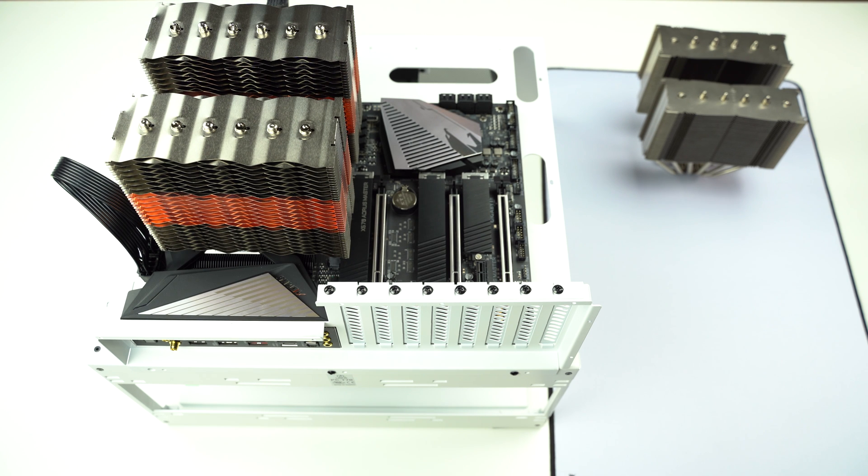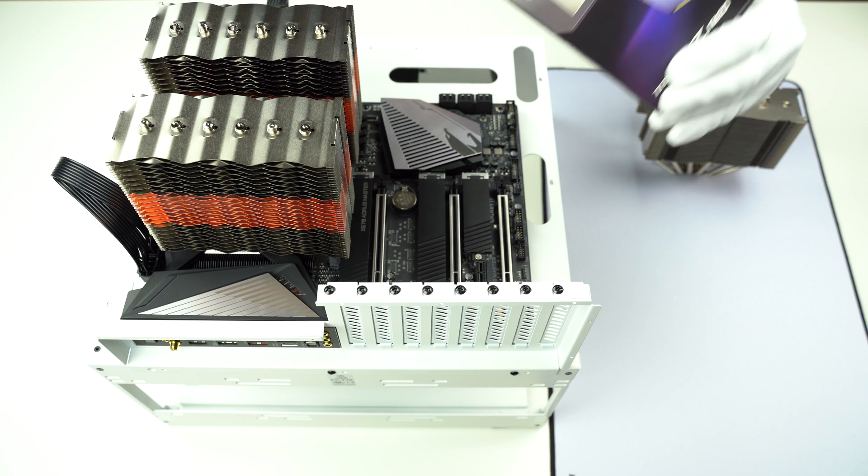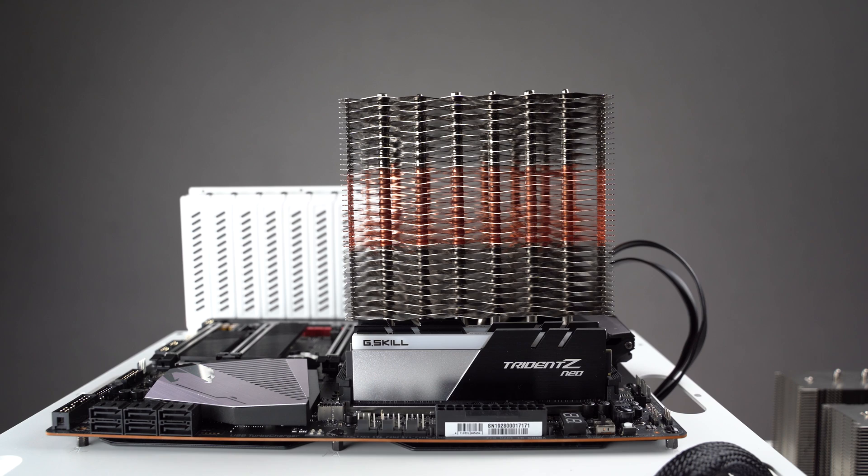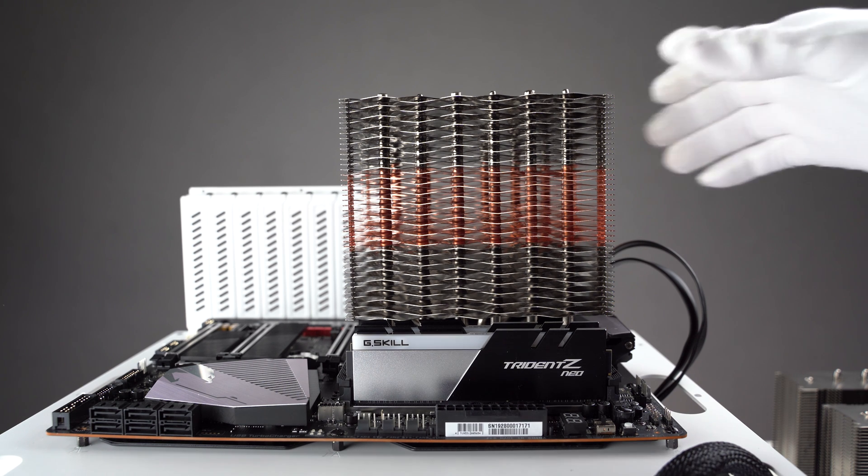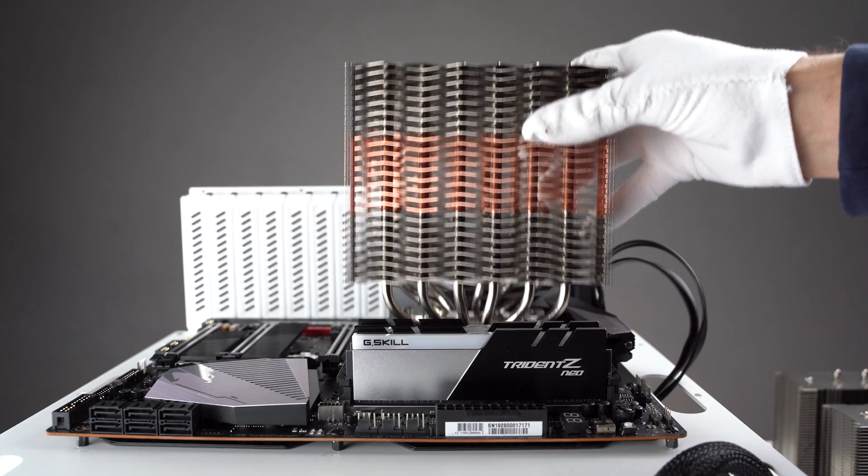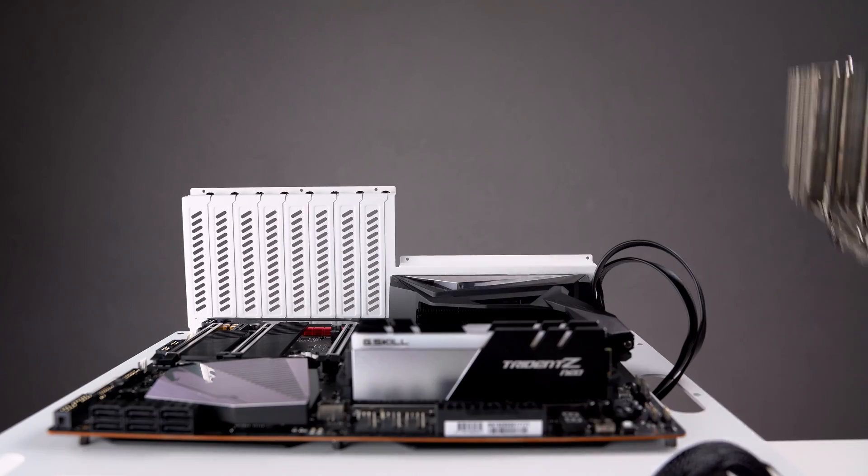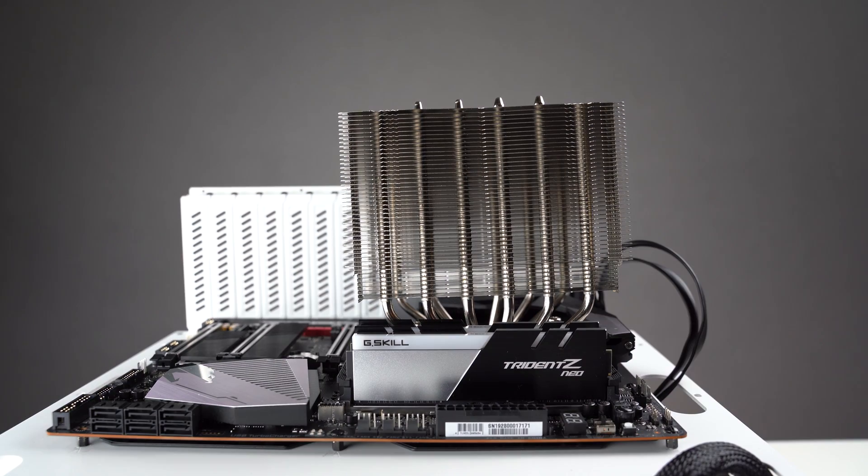Actually, to my surprise, you'll be able to fit these G-Skill Trident Z Neo memory modules under this cooler. However, there is enough space above the memory modules and the CPU isn't installed, so it will be probably a millimeter or two higher. Let's now compare it to the Noctua. So it's quite a difference.